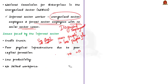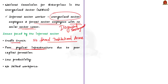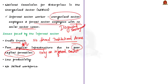Having seen the definition, now let us see the issues faced by the informal sector. First is credit crunch. The informal sector units, due to their small size, are not able to access credit from formal financial institutions. They have to rely on informal credit to run their business. Second is poor physical infrastructure — also an effect of the credit crunch. Since they have to rely on informal credit, they have to pay huge interest, which affects their capital formation. Due to poor capital formation, there is poor investment in infrastructure, leading to poor physical infrastructure in the informal sector.